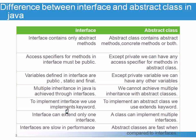Sixth difference: An interface can extend only one interface, and an abstract class can implement multiple interfaces.